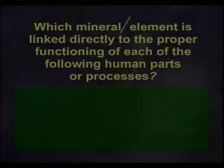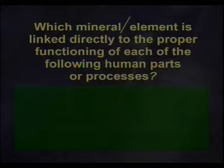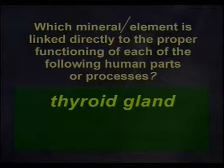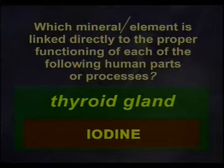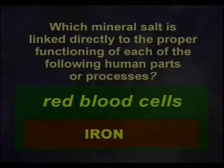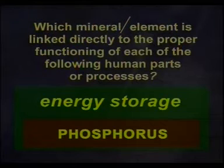Which mineral is linked directly to the proper functioning of each of the following human parts or processes? The human tooth — calcium. That is correct. The thyroid gland — iodine. That is beautiful. Red blood cells — iron. Good. Energy storage — phosphorus. That is good.